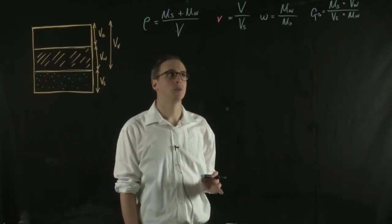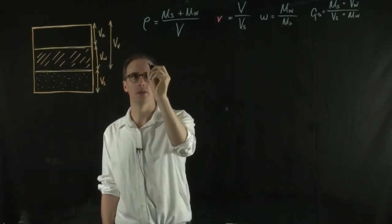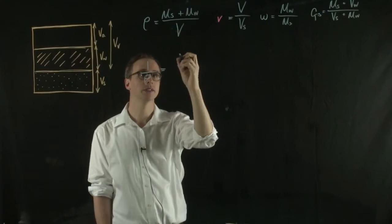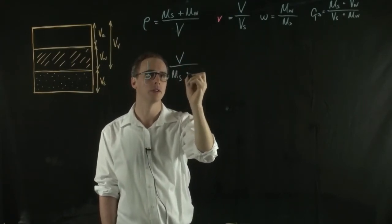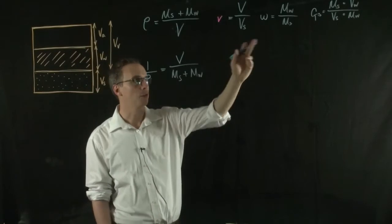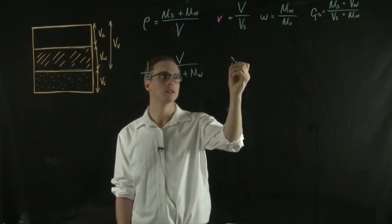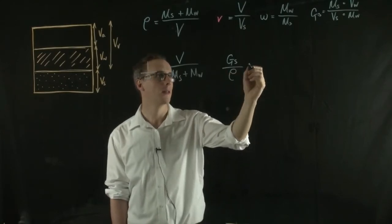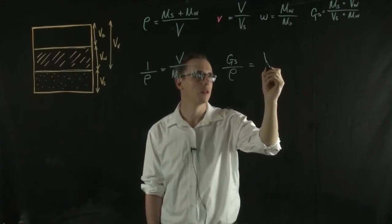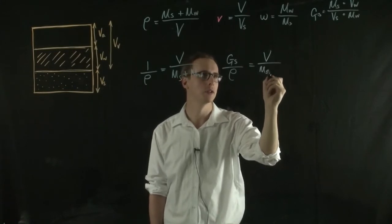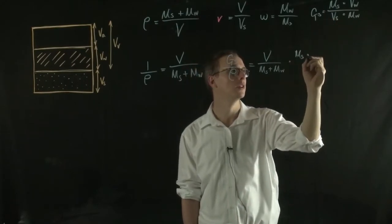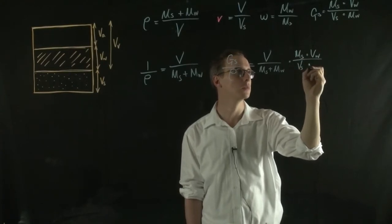The first step in relating these parameters together is to take the inverse of the bulk density. If we take 1 over bulk density, we essentially just flip the equation, giving us total volume over the mass of the solid plus the mass of the water. Then if we multiply by specific gravity — so we have specific gravity over bulk density — we have the total volume over the mass of the solid plus the mass of the water, times the mass of the solid times the volume of the water, all over the volume of the solid times the mass of the water.